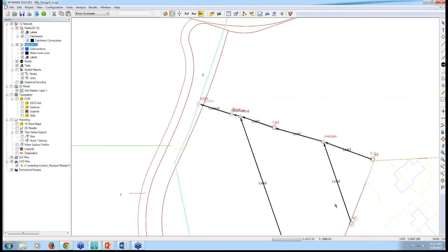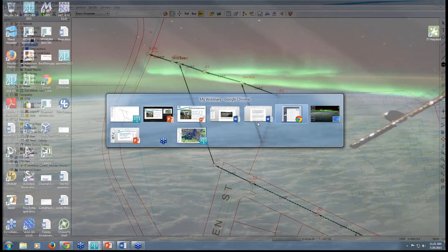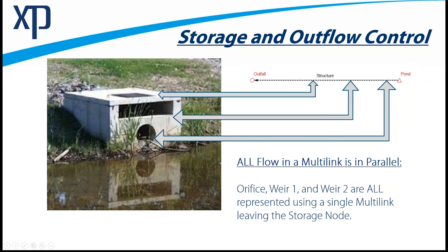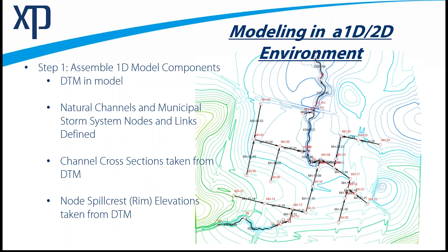From this point, I'd like to move into a discussion relating to 1D/2D modeling to look at the same type of issue. This is the project site — a relatively significant urban development with natural channel streams and a municipal storm system. The first step in building your 1D/2D model is to assemble the 1D model components, which involves importing or building a DTM, creating your natural channels at both the south and north ends of the project, and creating the municipal storm system.